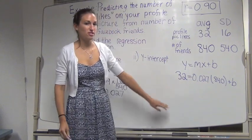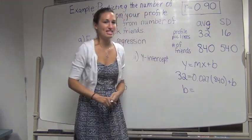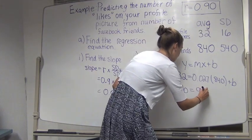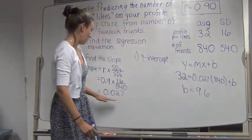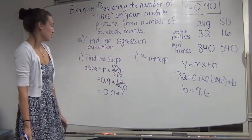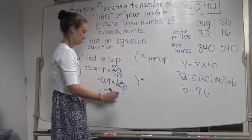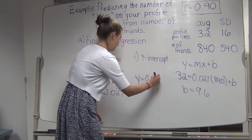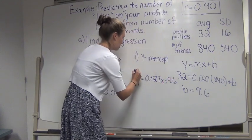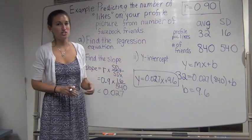So now we have everything filled in except our one unknown. So we can solve for b by multiplying 0.027 and 840, and then subtracting that from 32. What do I get for b? 9.6. So we have our slope, we have our y-intercept. And now when it says find the regression equation, we can write our regression equation as y equals 0.027, our slope, x plus 9.6, our y-intercept. So this is our final answer. This is our regression equation.